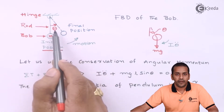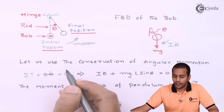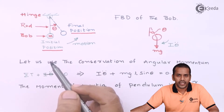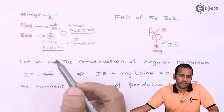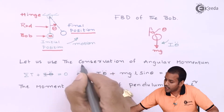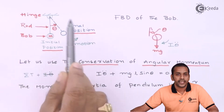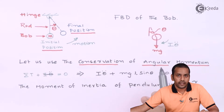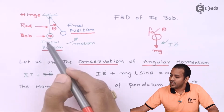Let theta represent the position of the bob after some time t — this is the final position. To derive the governing equation we need a conservation principle. We will use Newton's second law for rotation, i.e., conservation of angular momentum. To apply this, we need the torques acting on the system — the forces acting on the bob — so let us draw the free body diagram.